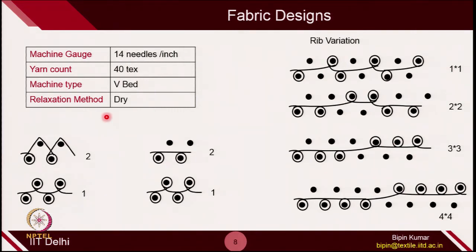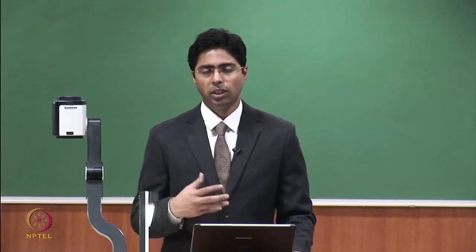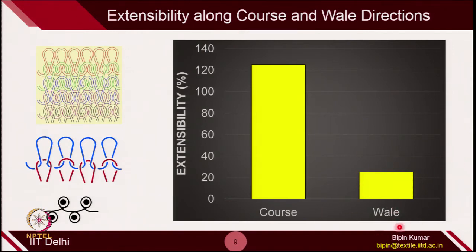Let's see some of the results. We observed different extensibility behavior in course and wale directions. For the simple rib fabric — loops on each needle from front and back bed — the extensibility in the course direction is much, much higher than in the wale direction. This is obvious: when you try to stretch in the course direction, the loops are in a loop shape and will try to open up. The leg which is in a V-shape will try to open up, so you have more chance that the loops can open up — resulting in maximum extensibility along the course.